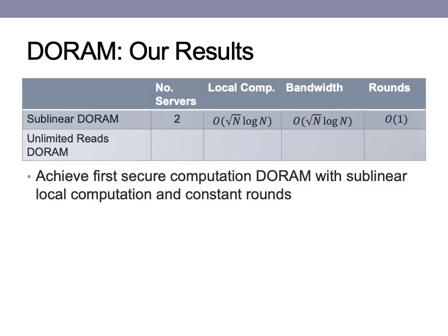In summary, we are able to achieve the first secure computation DO-RAM variant with sublinear local computation and constant rounds. Our local computation is square root log n, where n is database size — the square root comes from the linear operations performed on the stash, and the log n comes from the binary search performed to find elements in the store. I now want to discuss how we extend this construction to support unlimited reads without having to update the stash, which creates far better performance when the number of reads greatly outnumbers the number of writes.